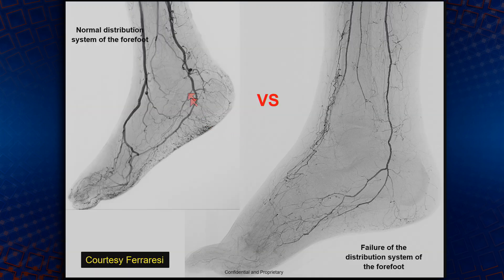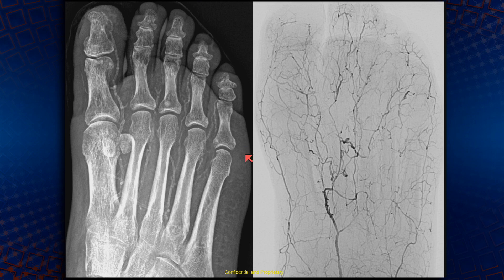A typical patient with normal vasculature compared to a patient with failure of the distribution system — the effects are pretty clear. If you do a plain x-ray, you see severe calcification in these diabetics. We're starting to see more and more of these patients because we're not amputating them — we're treating their tibial vessels and salvaging their legs.